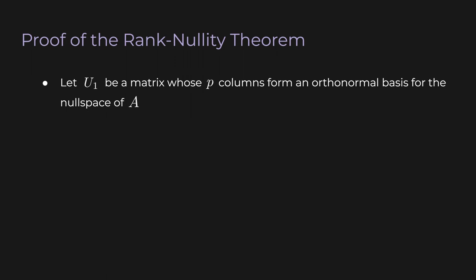First, assume we have a matrix U1 with n rows and p columns, and those columns form an orthonormal basis for the null space of A. In other words, the nullity of A is p. If we multiply A by each of the p columns of U1, we will get the zero vector each time by definition. If this assumption bothers you, remember that this is a proof, not an algorithm. And if you're still bothered, just know that it's really easy to find an orthonormal basis for the null space of A.